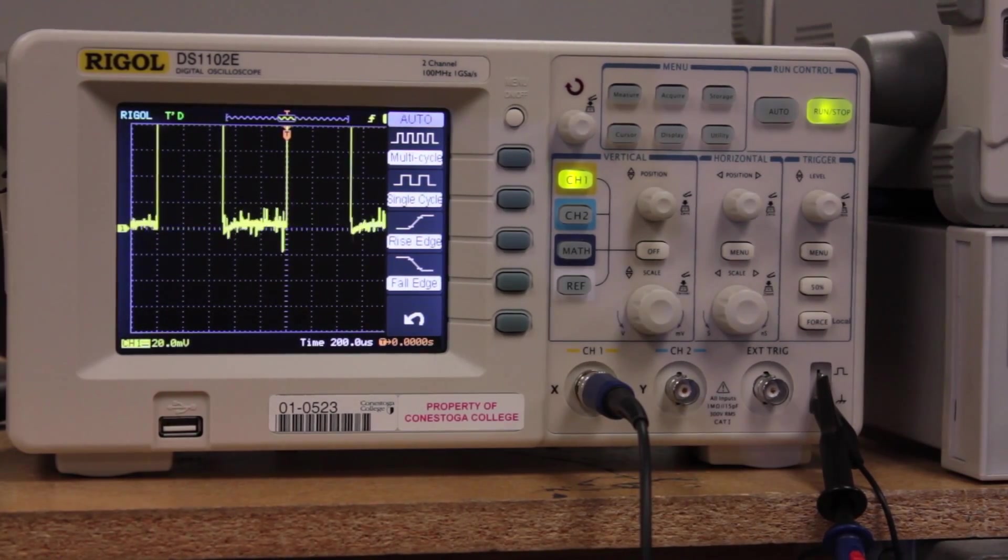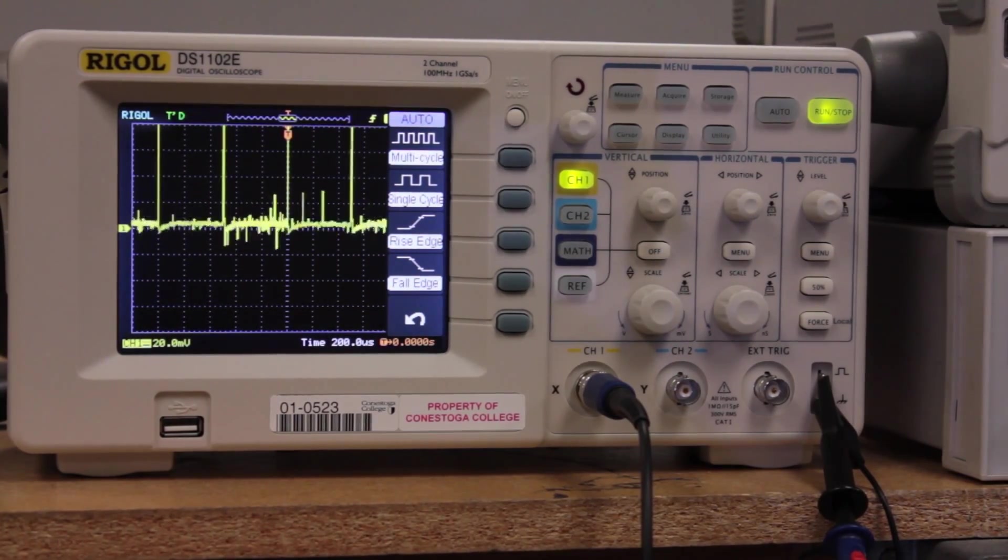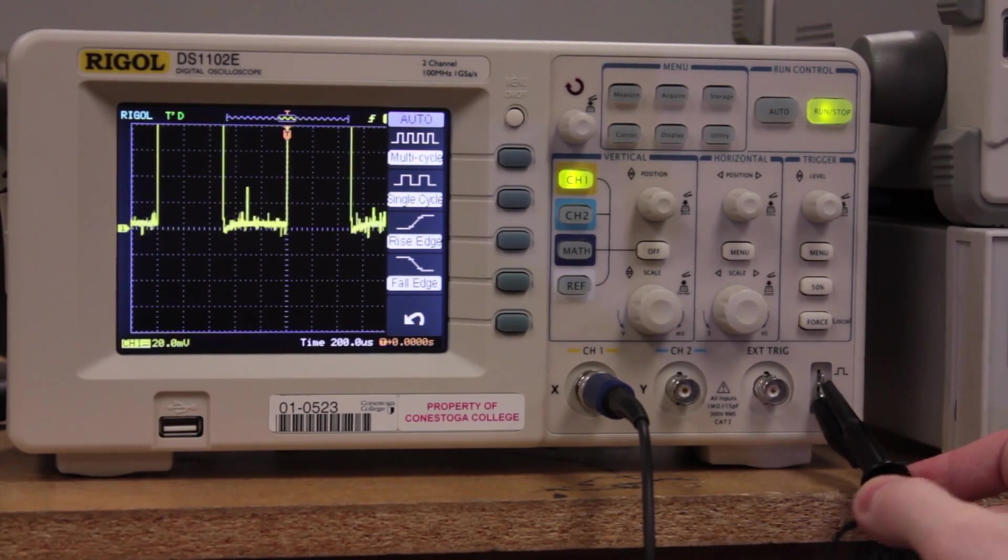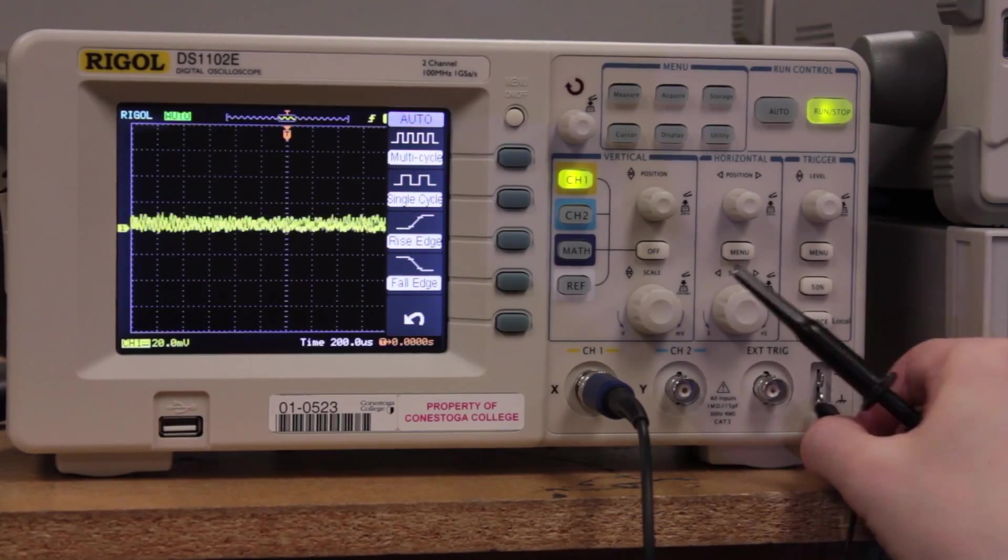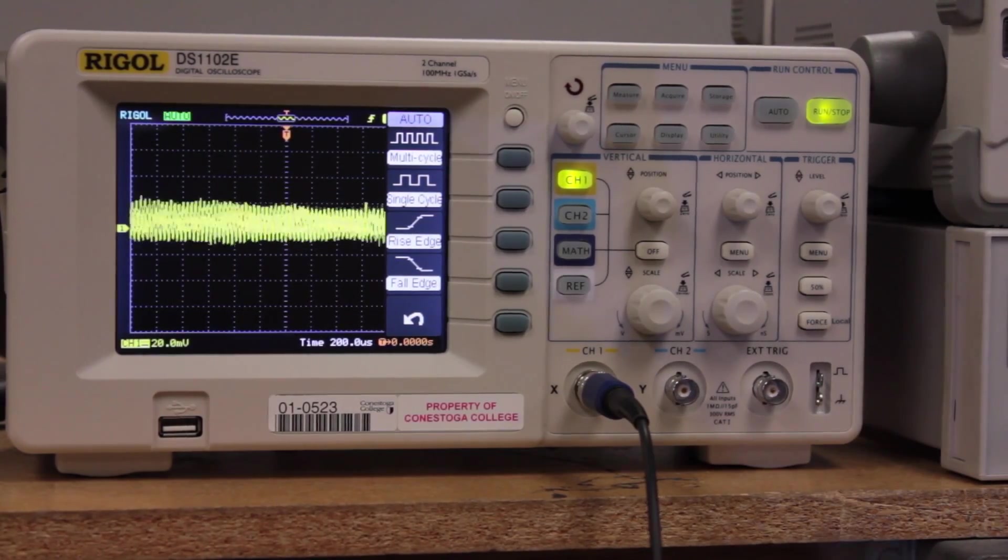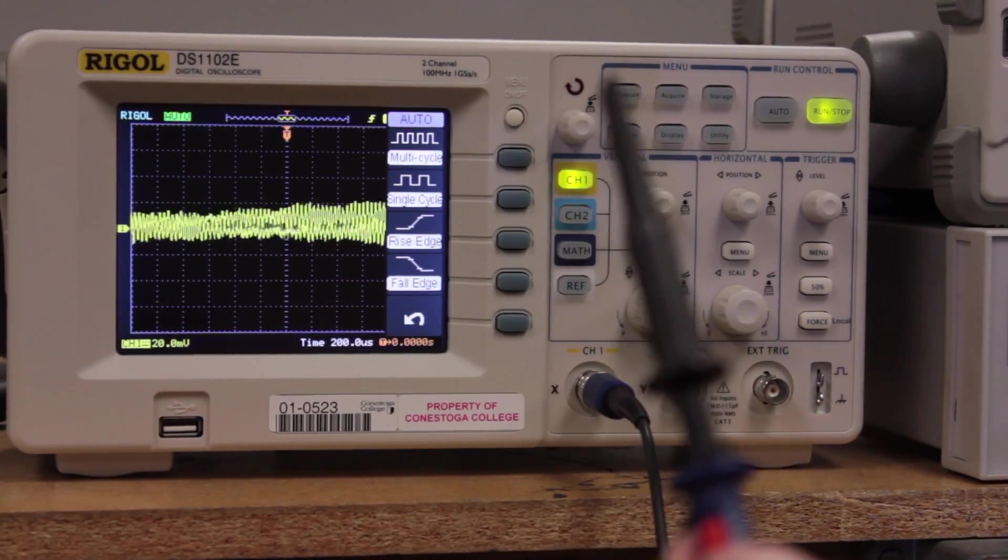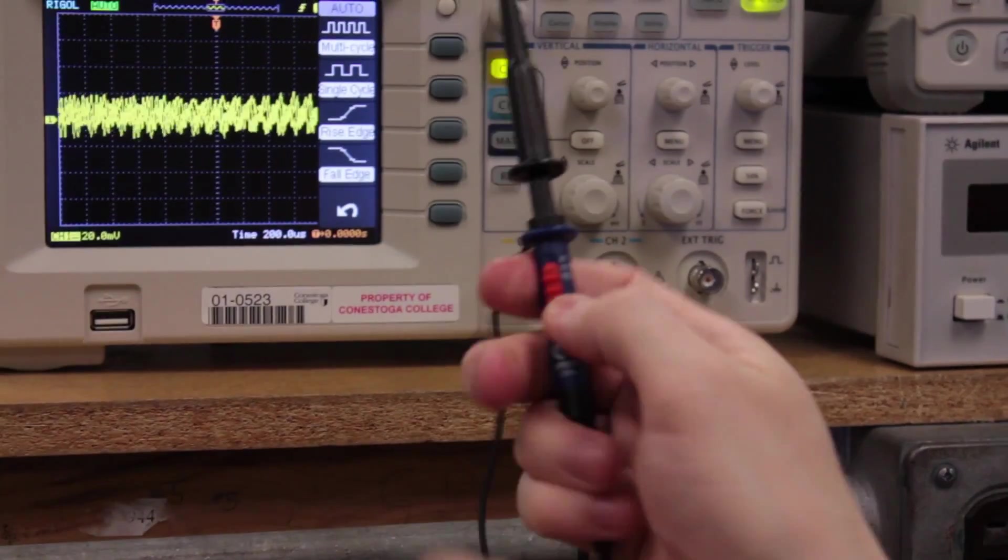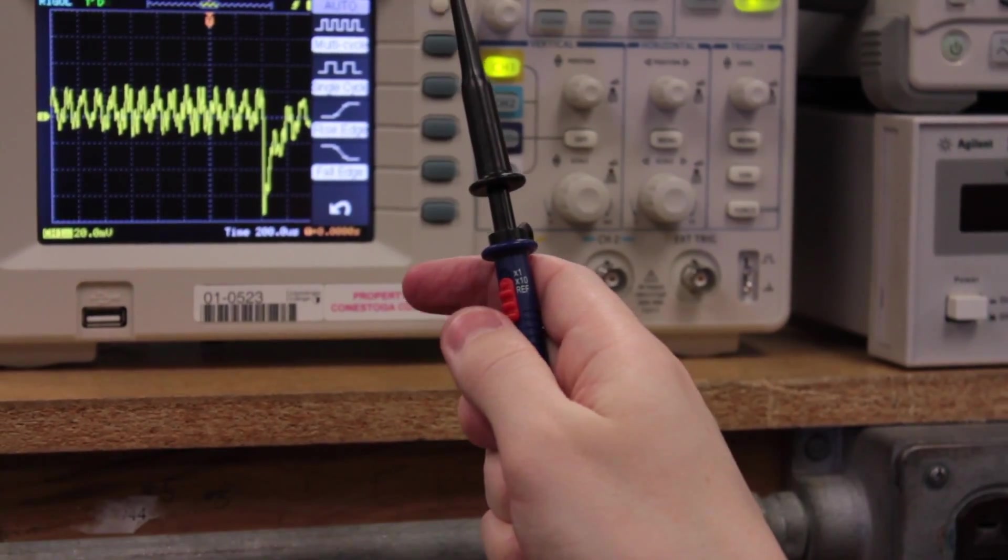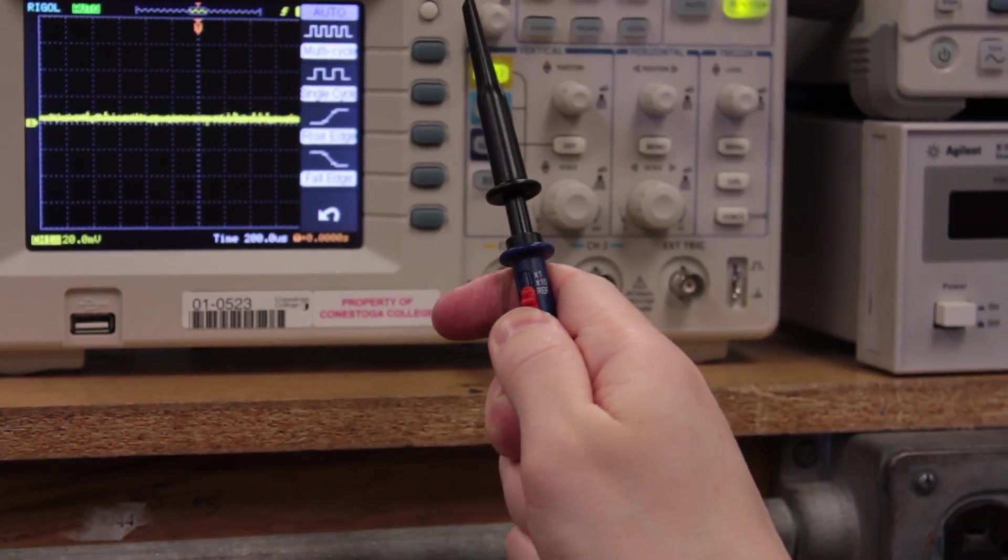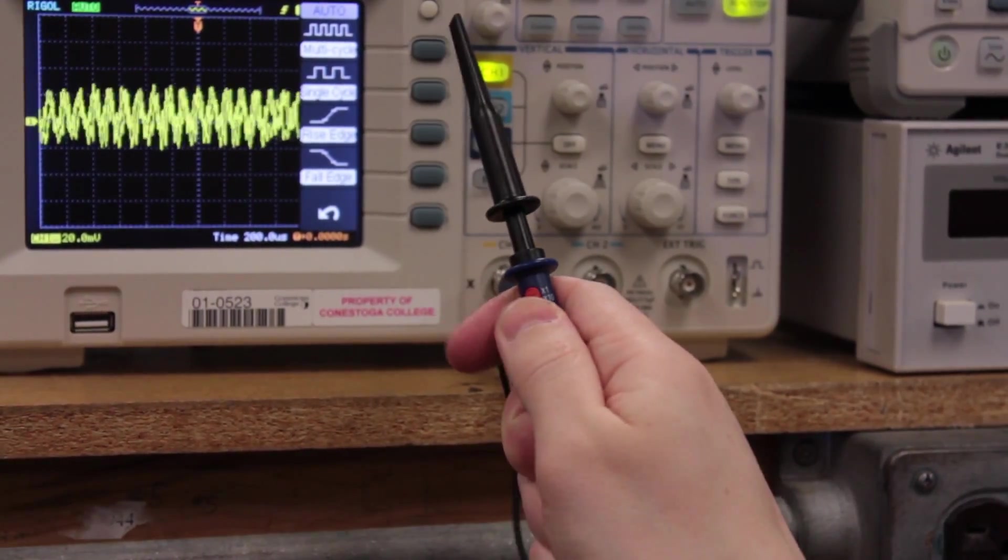And for good results you want to do this every time. Although realistically you don't have to. But if you're having trouble with your measurements, you'll want to calibrate your probe. Also make sure that your probe is set to 10 times right here on the dial. So you have 1 times, 10 times, and reference. You really won't use reference. You'll use 10 times and 1 times here.